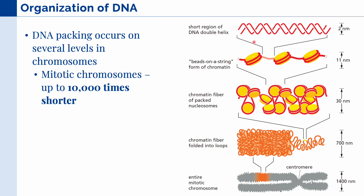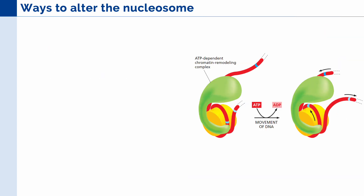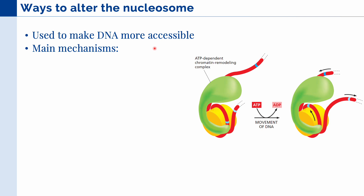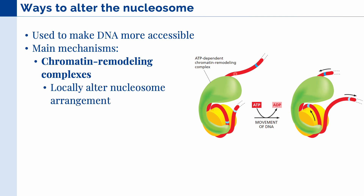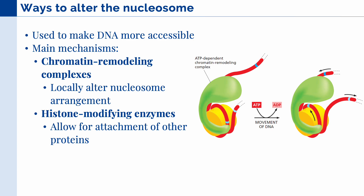Altogether, the cell has compacted our double-stranded DNA up to 10,000 times shorter. One caveat to the highly packaged DNA in our cell is that once DNA is tightly packaged, the proteins that need to access the DNA have a hard time reaching it. So the cell needs to find ways to alter the nucleosome, and this is used to make DNA more accessible. There are two main mechanisms for this. The first one are called the chromatin remodeling complexes, which we can see in this figure.